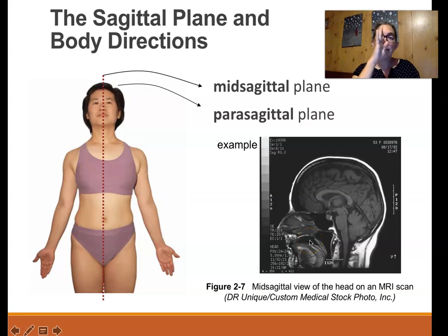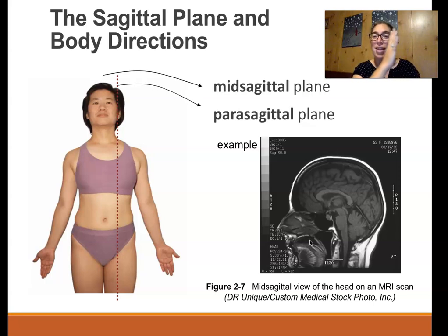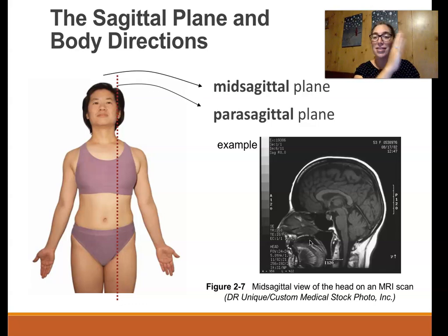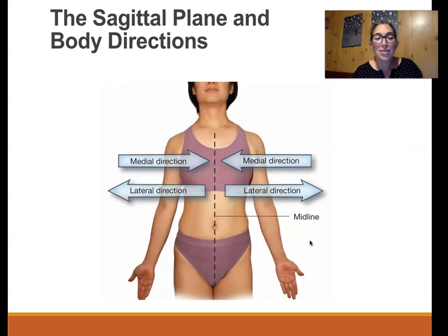If you need to look towards the side of the brain, you move the scanner, and that would be called a parasagittal section. The CT scan scans all the way through, and then you're looking at images of individual slices. A doctor may want to see a mid-sagittal section or a parasagittal section — those are some examples of those terms in use.